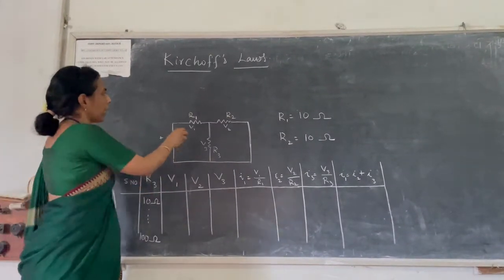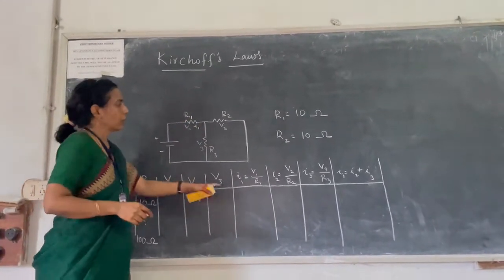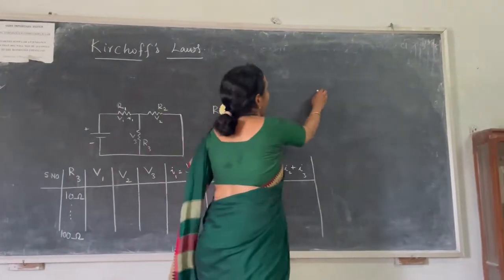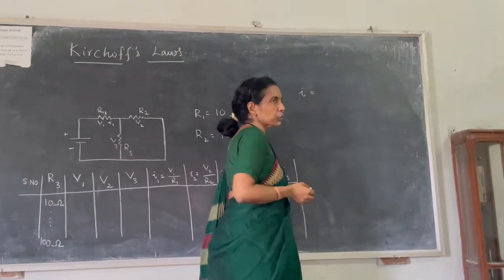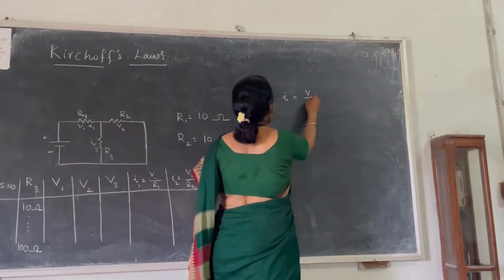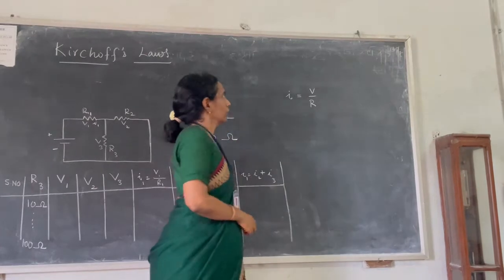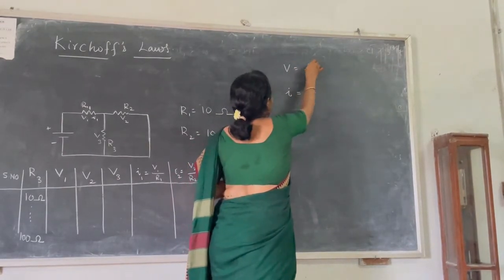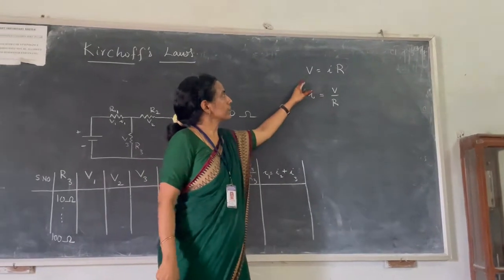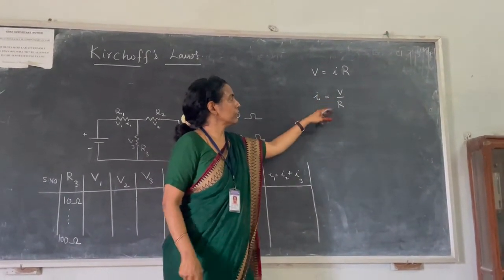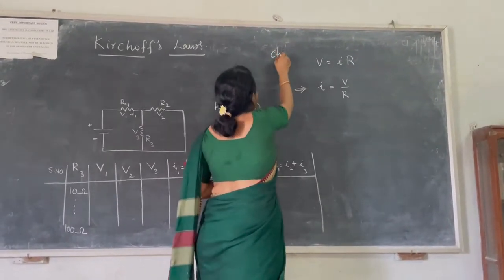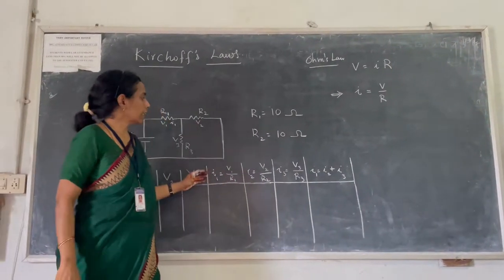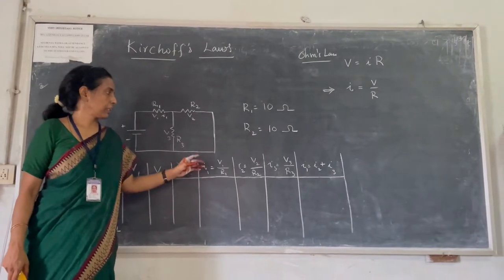To get the current passing through R1, that is I1, we can obtain it from Ohm's law. Ohm's law states that I is the current, which equals voltage divided by resistance. At constant temperature, V is equal to IR, so I is equal to V by R. Using this, we can measure the current passing through the resistance boxes.